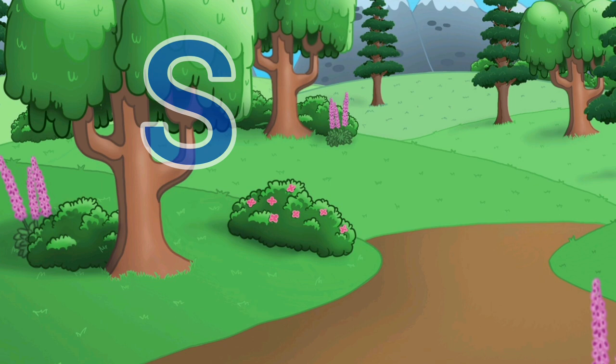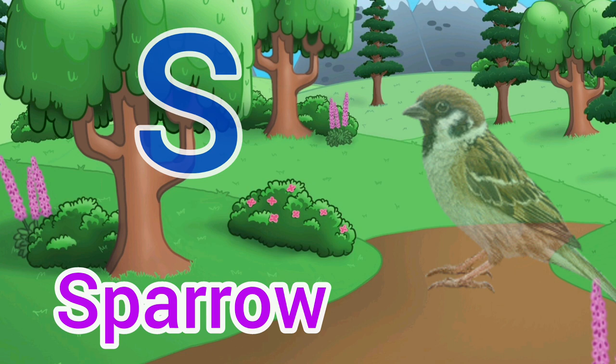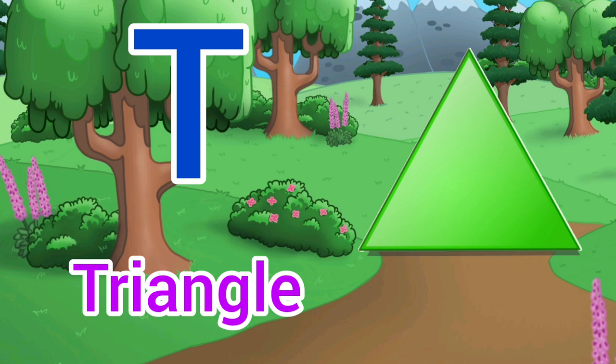S for Sparrow. Sparrow means ghosla. T for Triangle. Triangle means tribus.